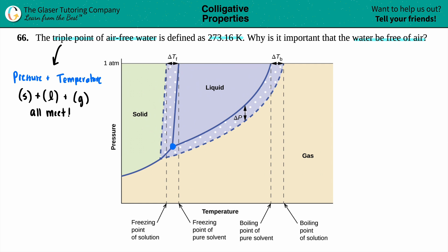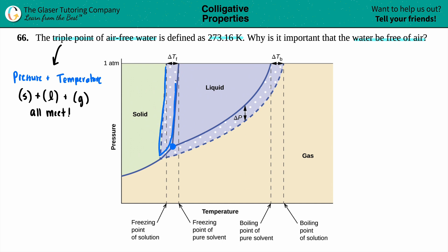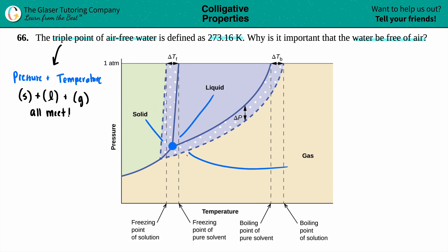Now, these dots on the diagram are just trying to show you that there's a change in temperature which may shift the triple point. But if we did not have a solution, all of this region would be part of the solid, and all of this part would still be part of the gas. The triple point is where solid, liquid, and gas all meet — this is the normal triple point.